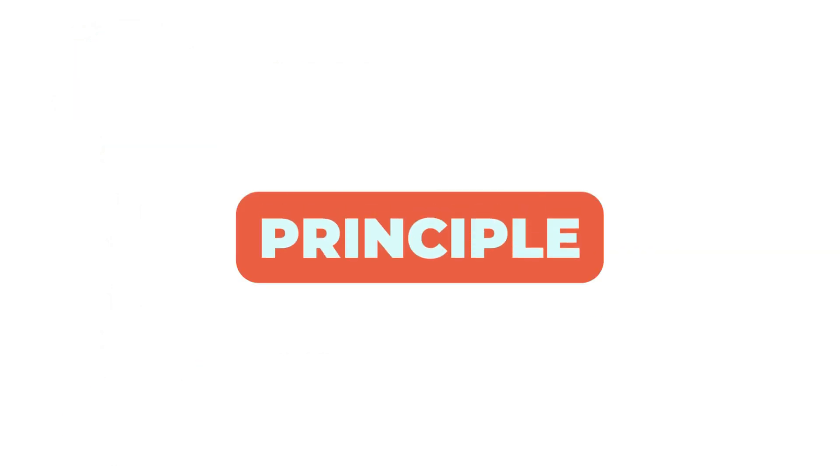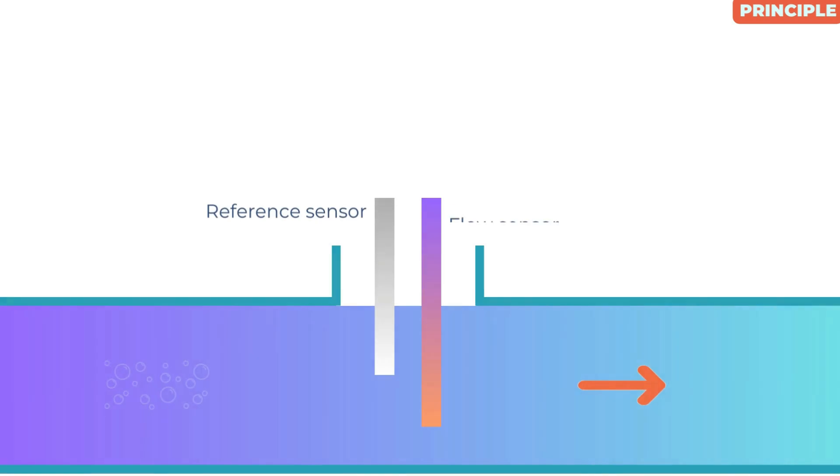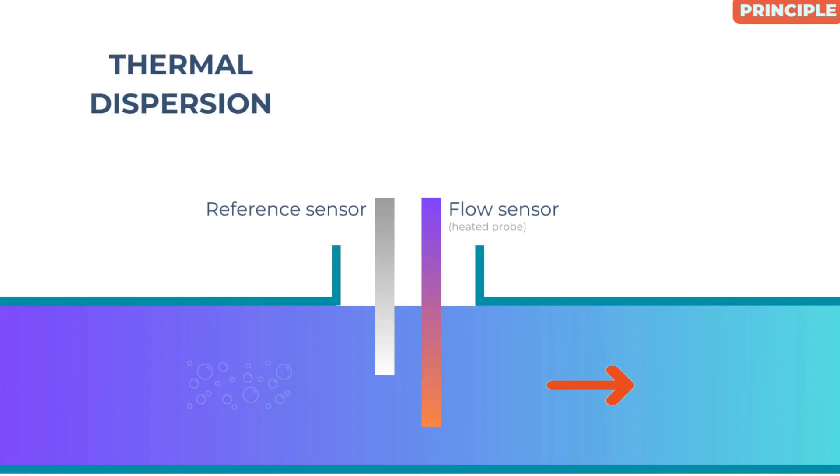Principle of thermal mass flow meter: Thermal mass flow meters employ the thermal dispersion principle whereby the rate of heat absorbed by a fluid flowing in a pipe is directly proportional to its mass flow.